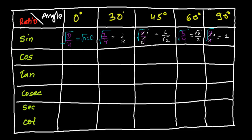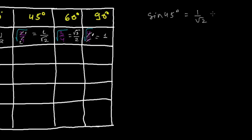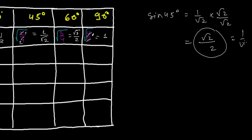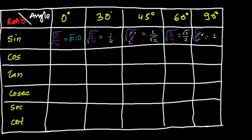Sine 0° = 0, sine 30° = 1/2, sine 45° = 1/√2, sine 60° = √3/2, sine 90° = 1. In some countries sine 45° is written as √2/2 — that's the same thing. If you rationalize 1/√2 by multiplying and dividing by √2, you get √2/2. Both are the same, so don't be confused.